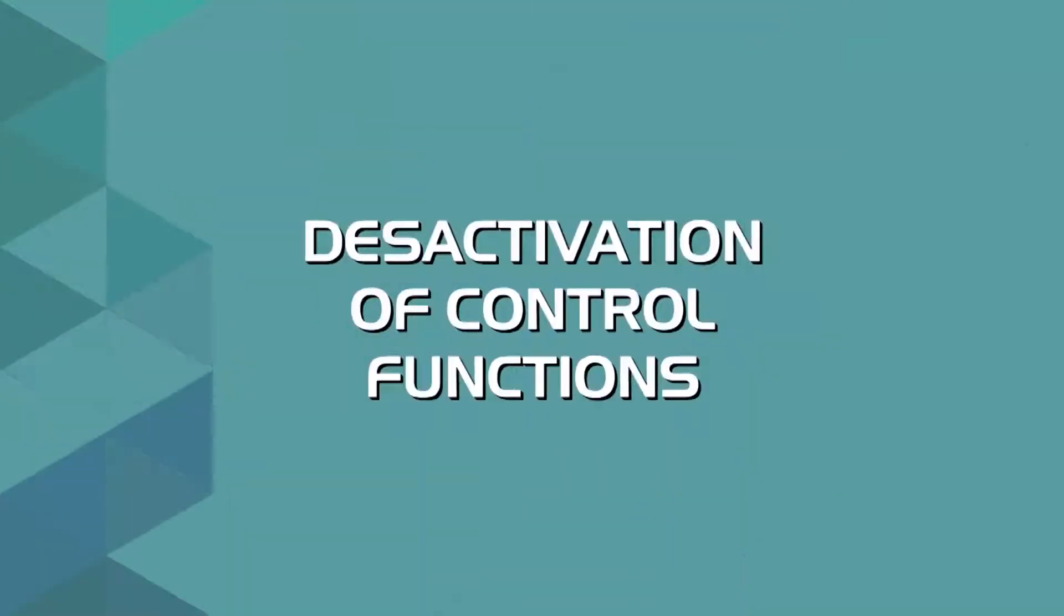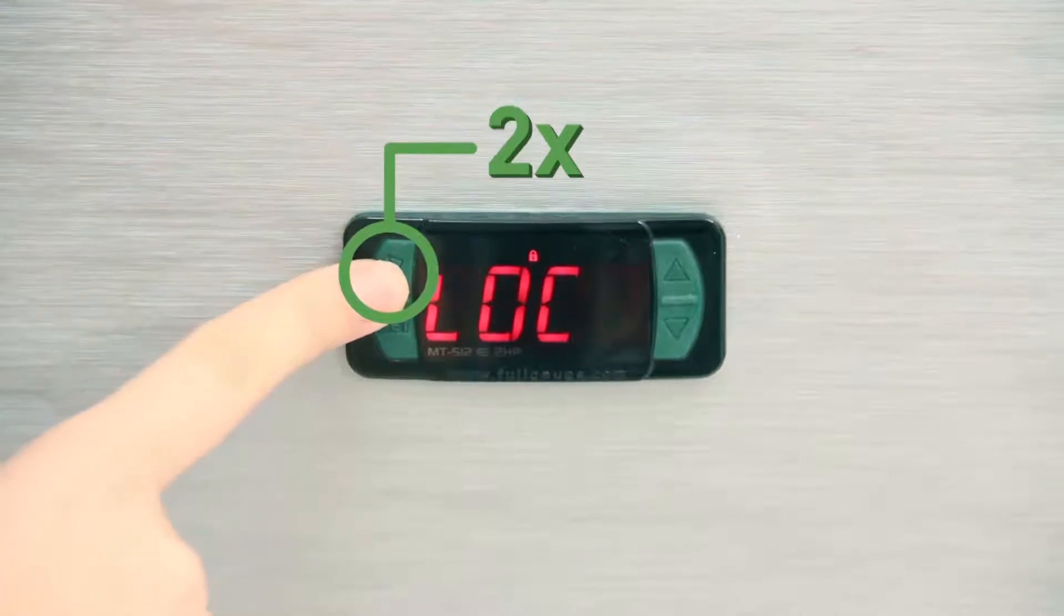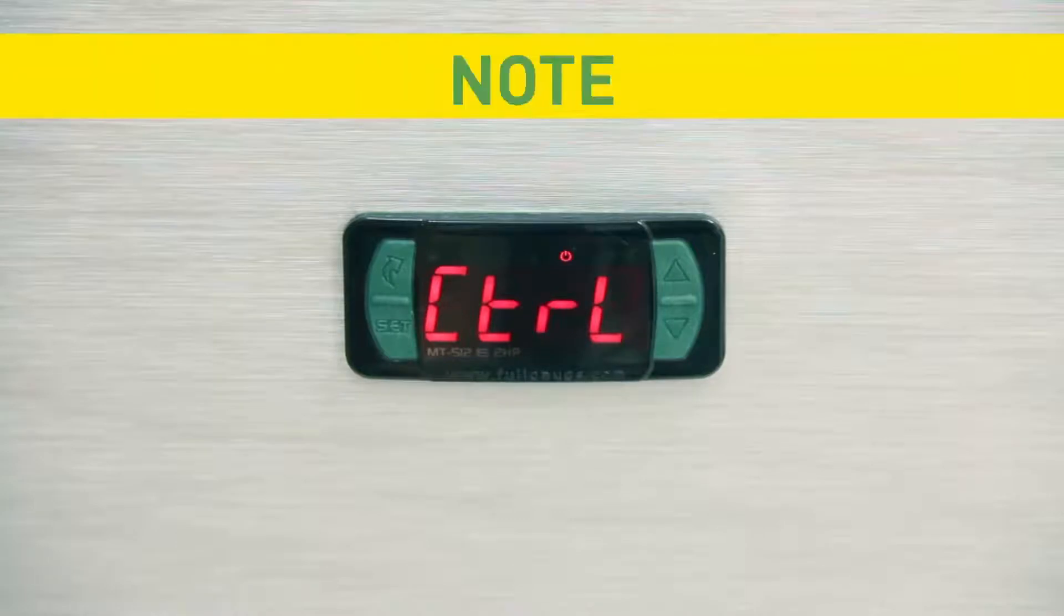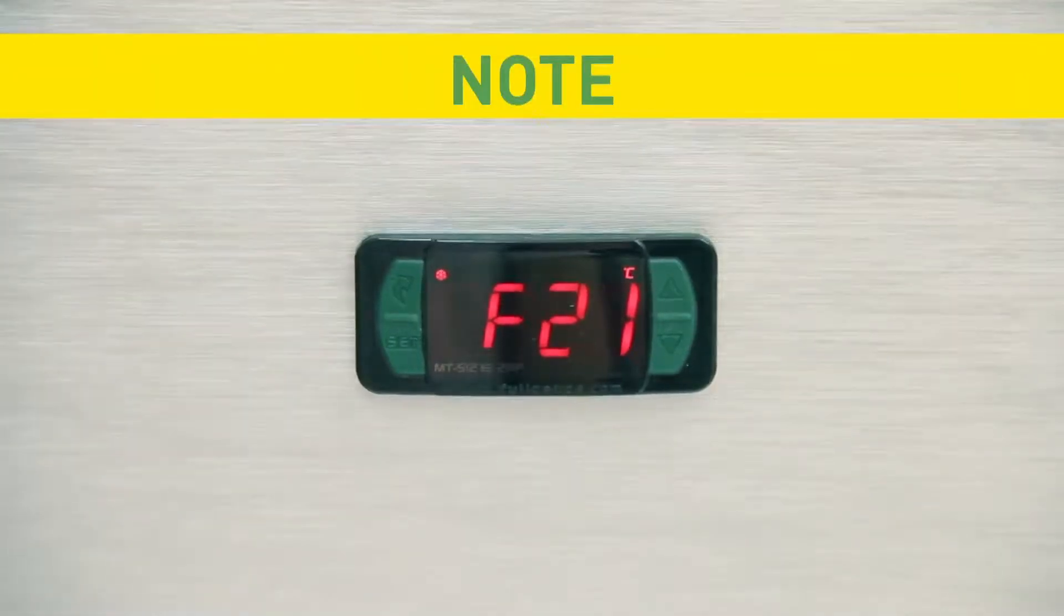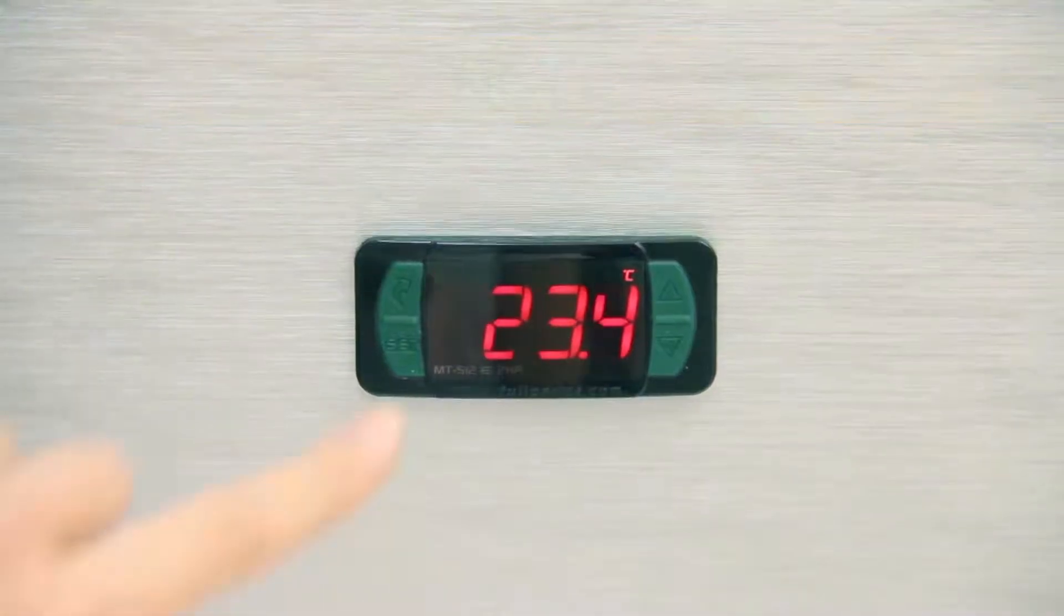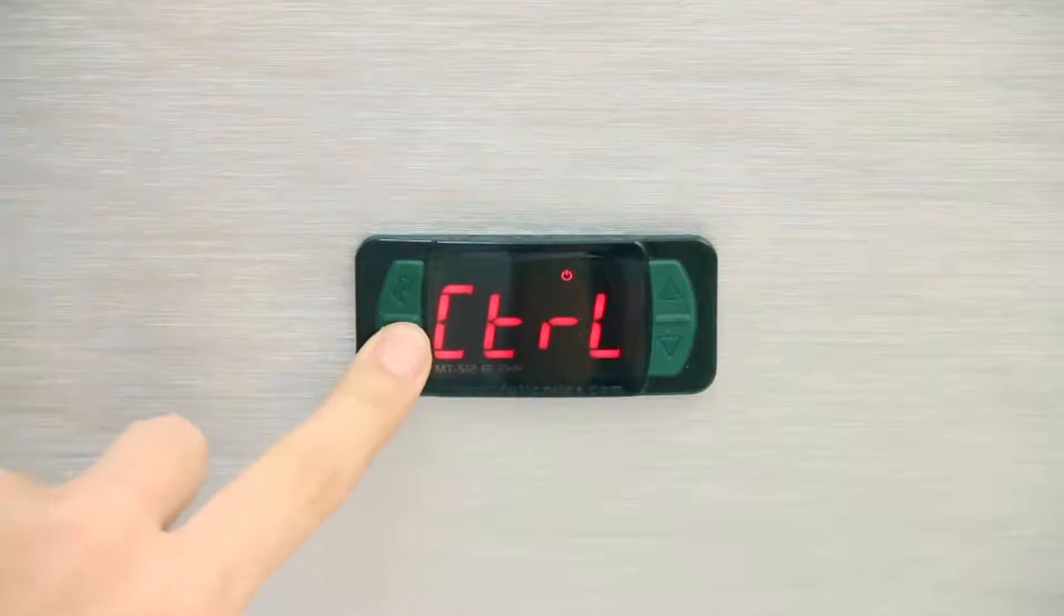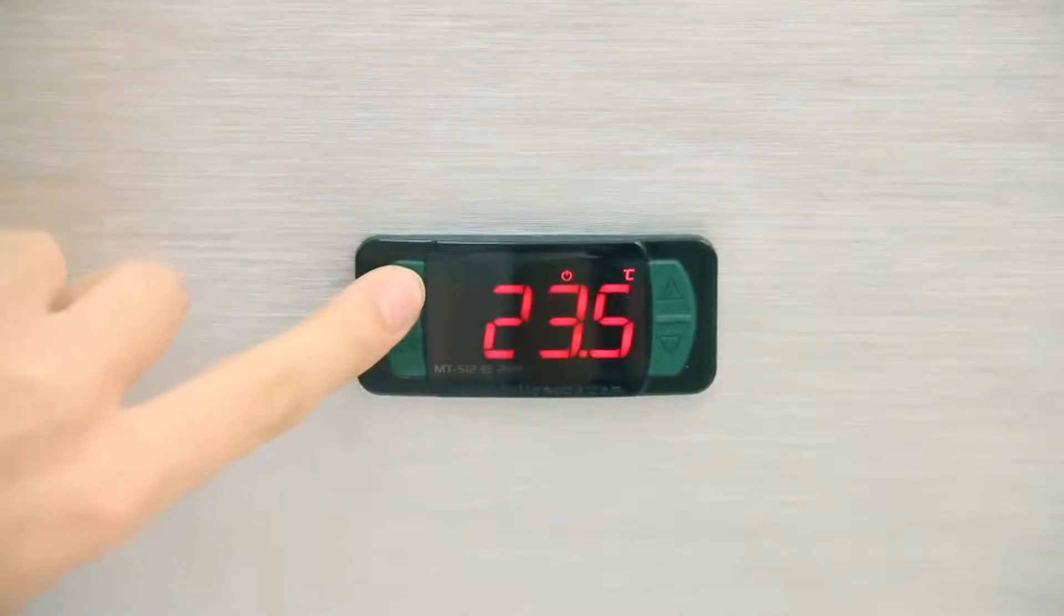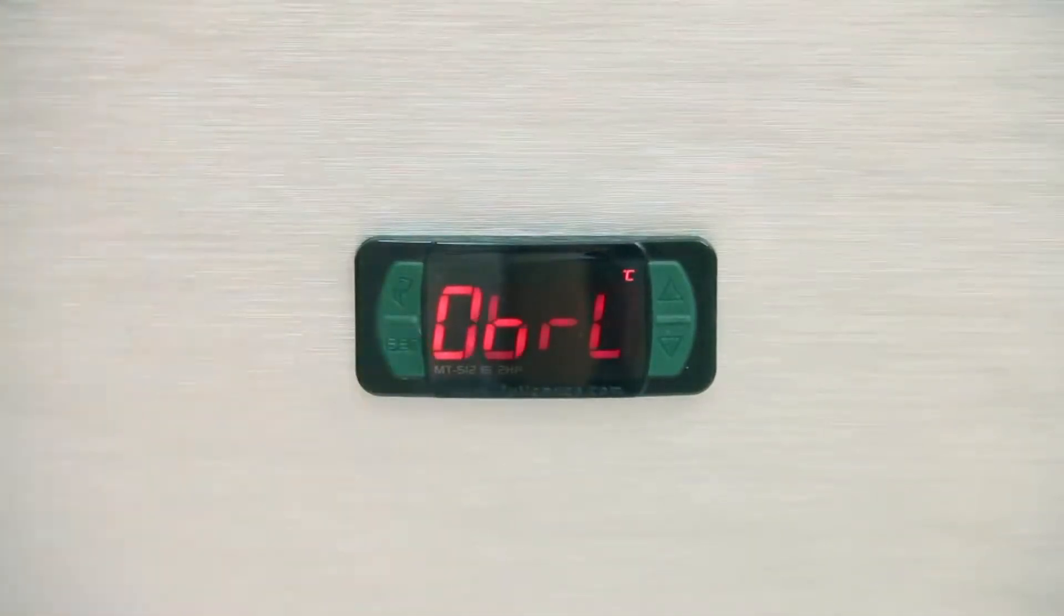Deactivation of control functions: This function causes the controller to operate only as a temperature indicator, turning off the load control relay. Note: to access this function, set the F21 parameter as explained in the user's manual. Through the FlatTech key, access control, then press set. The display alternates between temperature and the disabling indication. To reactivate the control functions, apply the same procedure, which will cause the reverse effect.